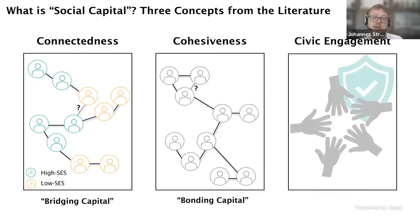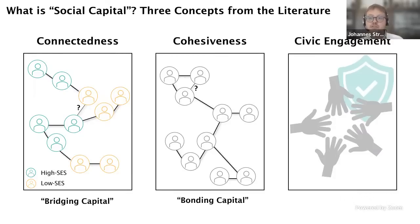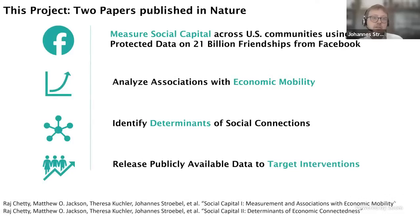The second concept is cohesiveness — also called bonding social capital — which captures the density of social networks within a community. One measure is the extent to which two of your friends are also friends with each other. The third group of social capital measures is civic engagement, which tries to capture things like the extent of volunteering or civic participation within a community. In this paper, we essentially do four things.